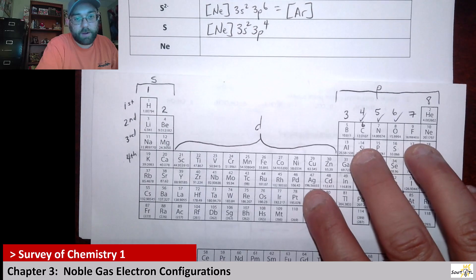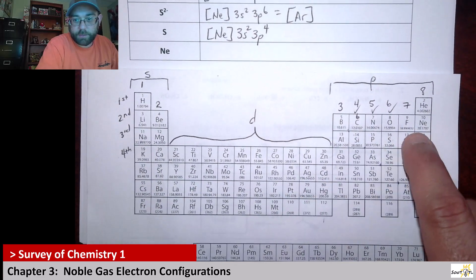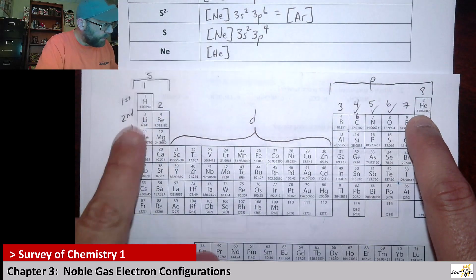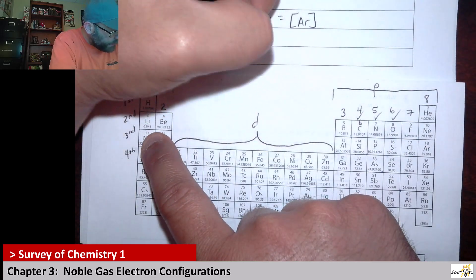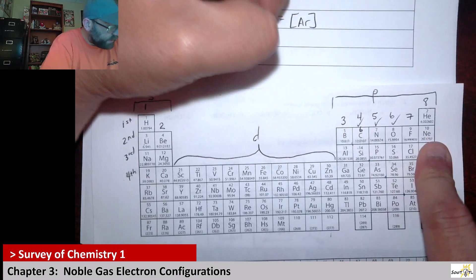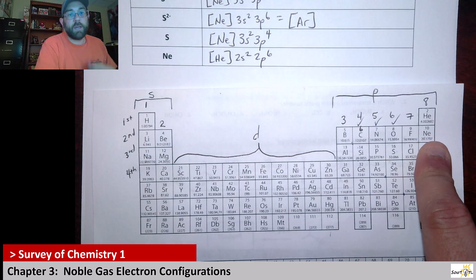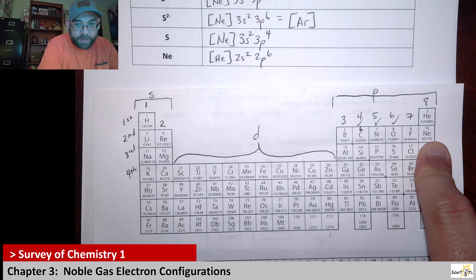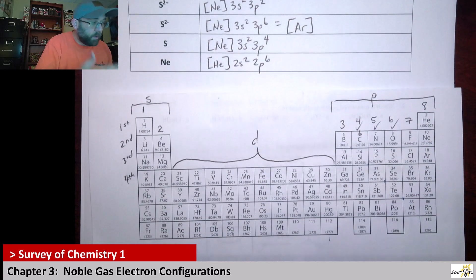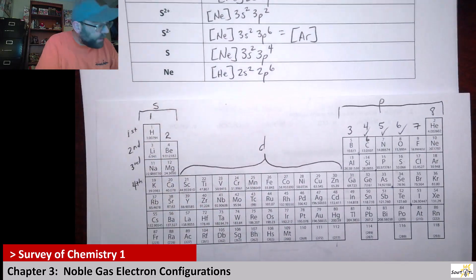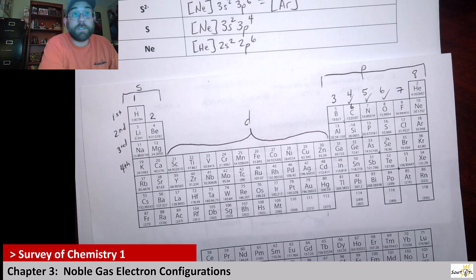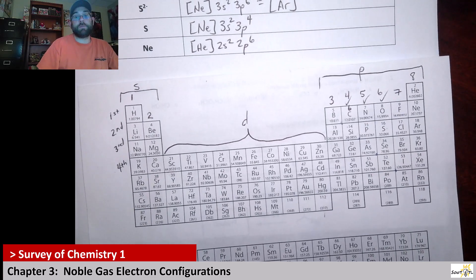For neon itself, I'm not just going to write neon in brackets. The noble gas before it is helium, and we're in the second row, so it's [He] 2S2 2P6 — two S electrons and six P electrons. Technically you could just put neon in brackets since it's a noble gas with eight valence electrons, but this is good practice. Hopefully this gives you enough practice to feel comfortable with it. Until next time, surveyors — I'll see you next time.